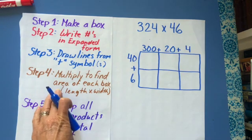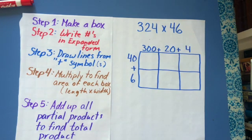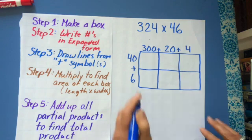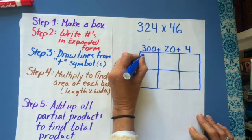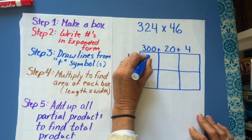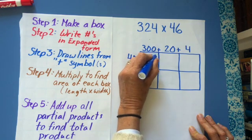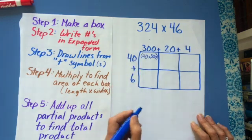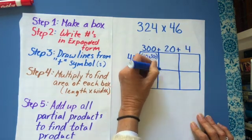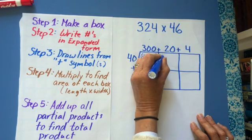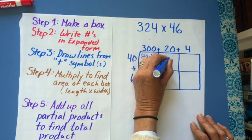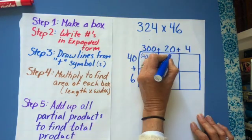The next step says multiply to find the area of each box. So I'm going to do that. So this is 40 times 300. So I'm going to write 40 times 300, and I put the parentheses to show grouping. Now I need to know the length of this side, which is 40. So I'm going to write 40 here. And I need to know the length of this side here, which is 20.